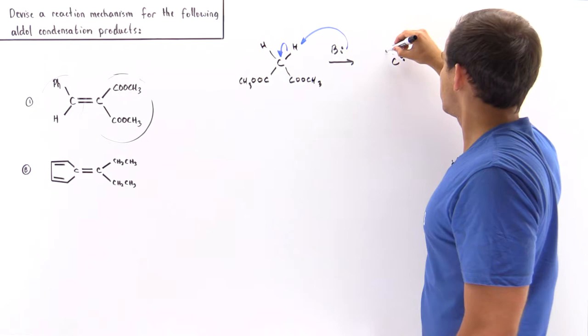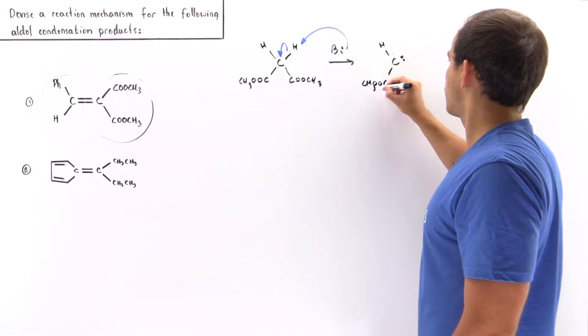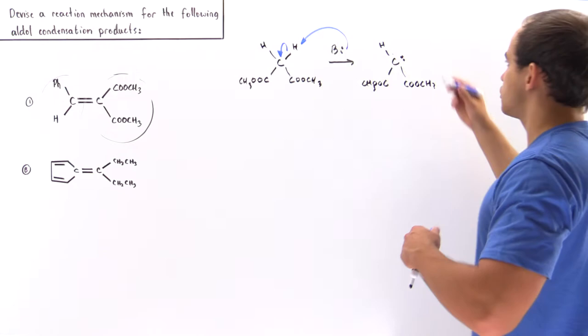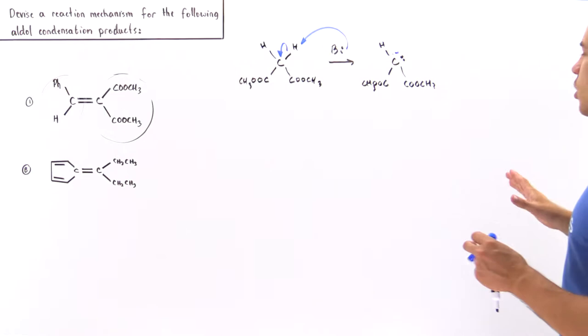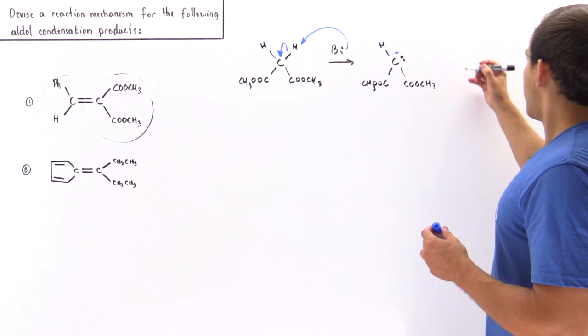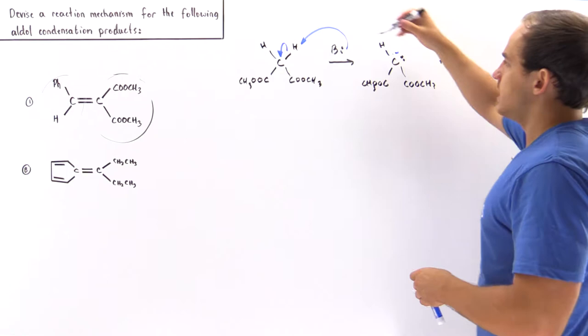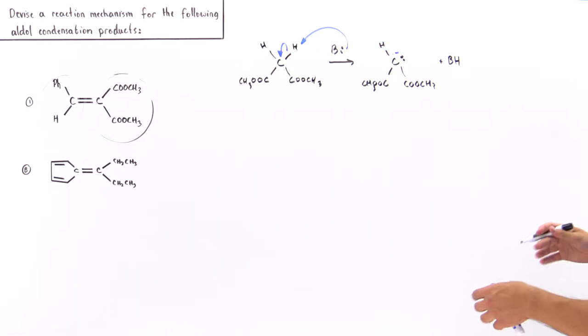We form our anion with two electrons on the carbon, one remaining H, and the two COOCH3 groups, giving a negative charge on that carbon. This is resonance stabilized — we won't draw all the resonance forms. We also produce the conjugate acid of the base. This base can be any strong base; let's suppose it's some type of amine.